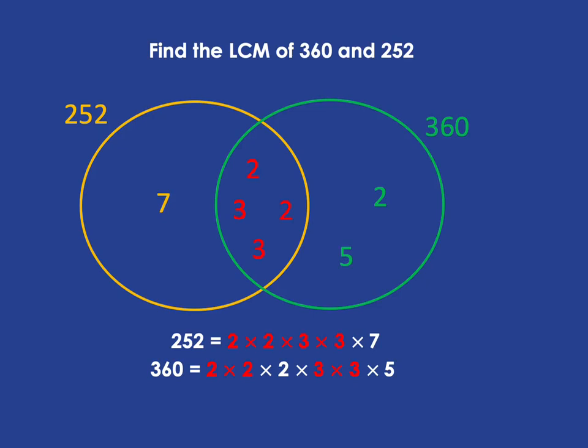Now, if we're looking for the lowest common multiple of 360 and 252, it's got to contain all of 360, so everything that's in the green circle. And it's also got to contain all of 252, so everything that's in the yellow circle. And so the lowest common multiple is going to consist of everything that we can see there.